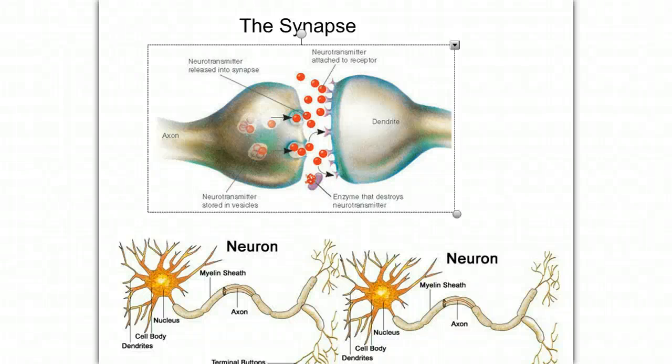We've already discussed how a neuron can generate and propagate an action potential to send a message. But what happens when that message reaches a destination? How does a neuron talk to another neuron, a gland, or a muscle?